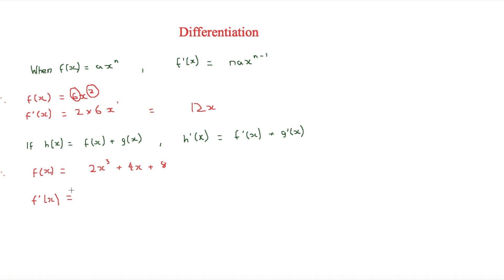The next thing to know is that when you have two things added together, you find the derivative of each term and then add those together. So here f(x) equals 2x cubed plus 4x plus 8. For the first term, the derivative of 2x cubed: 3 times 2 equals 6x, and 3 minus 1 equals 2, so that gives us 6x squared.